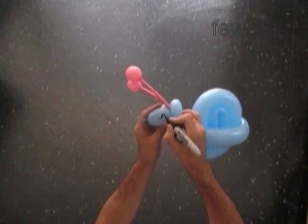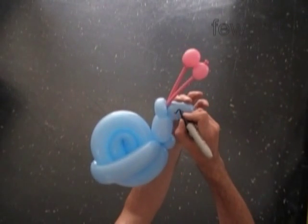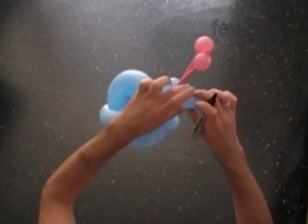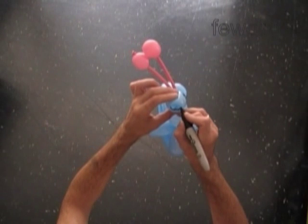Now I am going to use a permanent black marker to draw the face of the snail. Big nice eyes. Nose if you want. And smile.